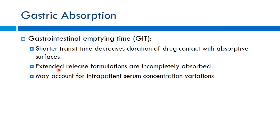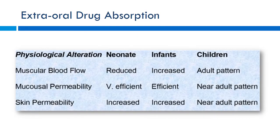If a patient has rapid GI transit, such as from diarrhea, an extended-release preparation designed to be absorbed over 12 hours may not be fully absorbed. This may account for some patients getting too much drug while others don't reach therapeutic levels, all due to impaired or variable absorption.